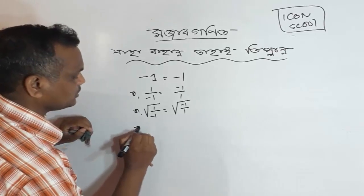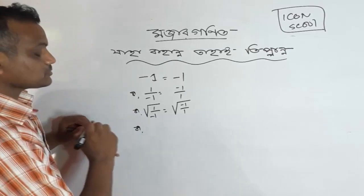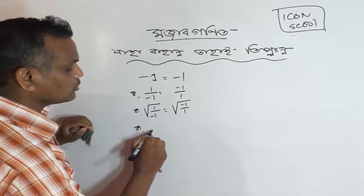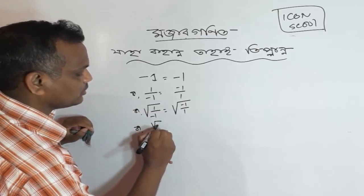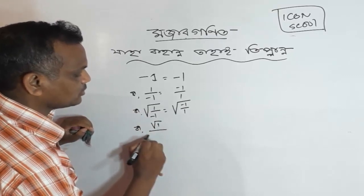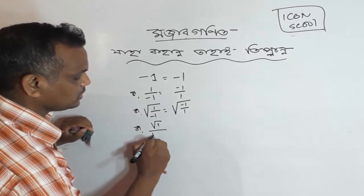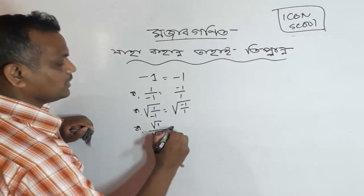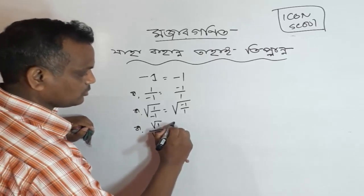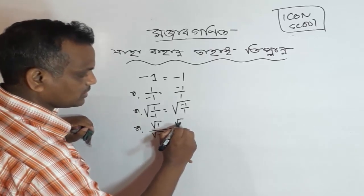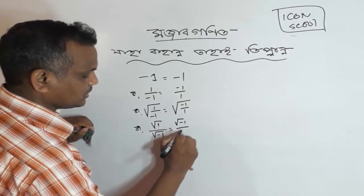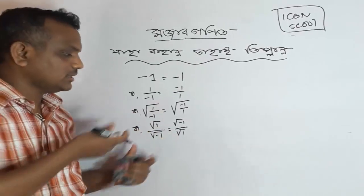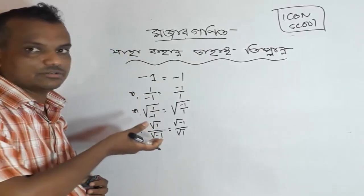So, what is this? I'm going to write minus 1. I'm going to write minus 1. The lesson is that we have basic rules and our basic rules.